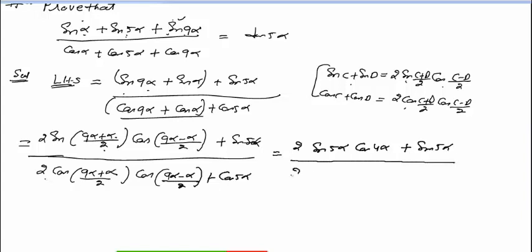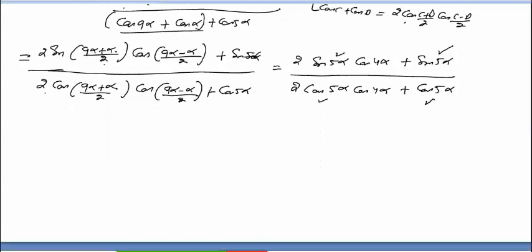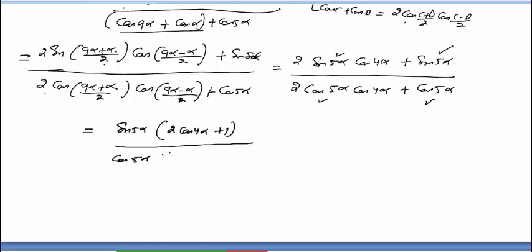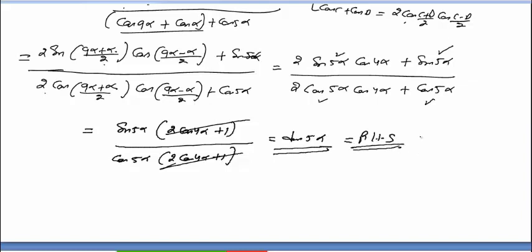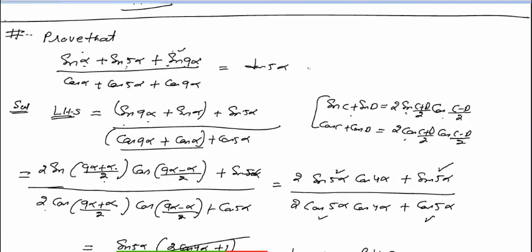Now, numerator में sine 5 alpha common है, denominator में cos 5 alpha common है। Numerator से sine 5 alpha common निकला, हमारे पास (2 cos 4 alpha + 1)। Denominator से cos 5 alpha common निकला, (2 cos 4 alpha + 1) — ये cancel हो गया। sine 5 alpha upon cos 5 alpha = tan 5 alpha = right-hand side. Hence proved.